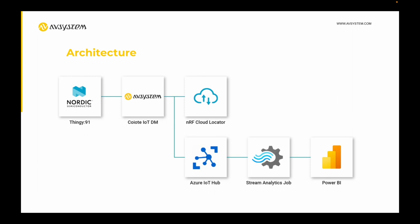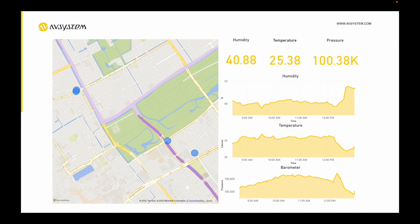We have an active integration running with nRF Cloud to derive a quick GPS location. From Coyote, I want to create an integration with Microsoft Azure IoT Hub and use a Stream Analytics job to eventually show the location data in Microsoft Power BI, and it could look something like this eventually. So let's get started.